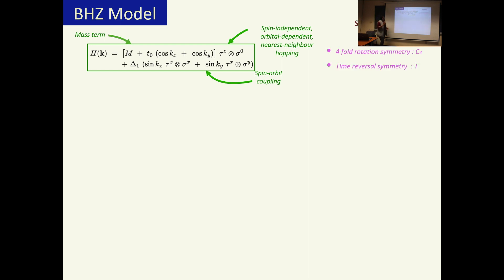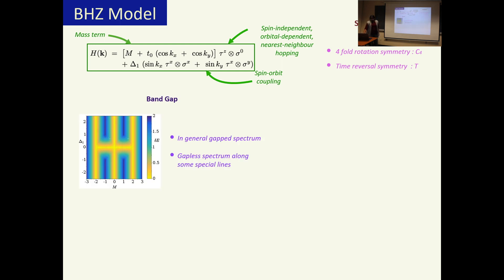There are basically two kinds of symmetries in this Hamiltonian which are of importance here. One of them is the four-fold rotation symmetry, the C4, and the second one is the time reversal, that is the t going to minus t symmetry. In general this model has a gapped spectrum except for some parameter values which are the lines here. This is a plot of the delta term versus the mass, and except some special lines in this parameter space, everywhere the spectrum is gapped.